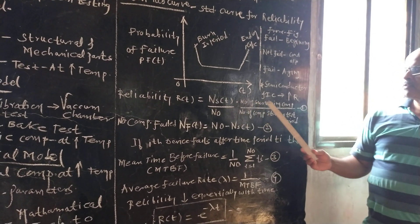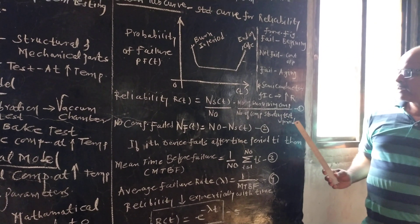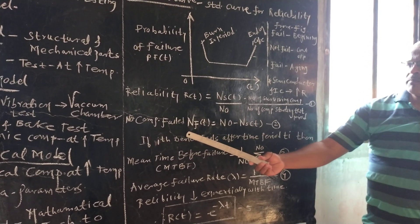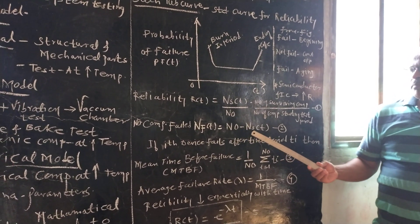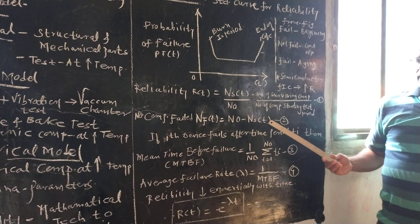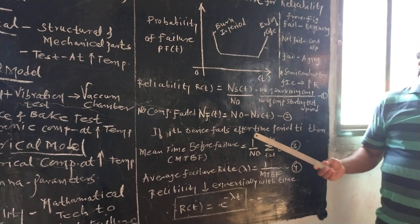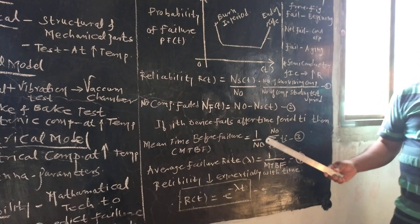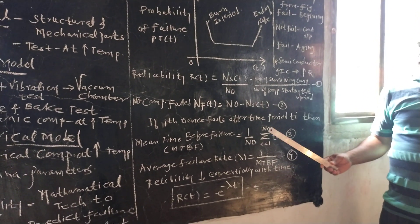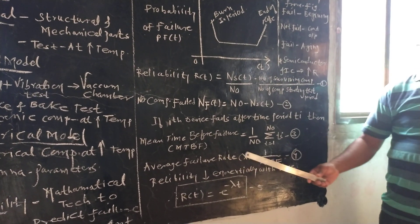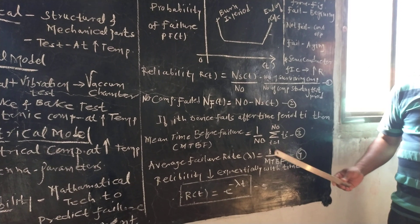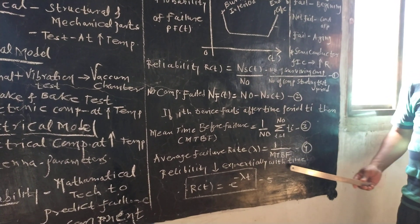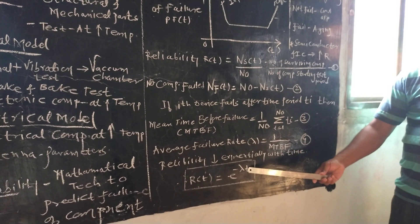Reliability R(t) is defined as the ratio of the number of surviving components N_s(t) to the number of components starting the test period N_0. The number of failed components N(t) equals N_0 minus N_s(t). If the i-th device fails after time period t_r, then the Mean Time Before Failure (MTBF) is given by (1/N_0) times the summation of t_r from r=1 to N_0. The average failure rate lambda equals the reciprocal of MTBF. Reliability reduces exponentially with time: R(t) = e^(−λt).